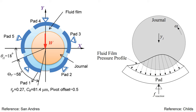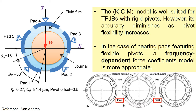The figure on the right displays the fluid film pressure profile, which generates both bearing stiffness and damping. The KCA model is well suited for tilting pad journal bearings with rigid pivots. However, its accuracy diminishes as pivot flexibility increases. In the case of bearing pads featuring flexible pivots, a frequency-dependent force coefficient model is more appropriate.